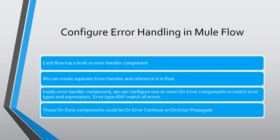For example, we can configure for the error type HTTP:NOT_FOUND. When the HTTP:NOT_FOUND error is raised, that particular On Error component will be executed. We can also configure the match condition based on an expression — for example, if the error message contains the word 'fatal', then that particular On Error component should execute.